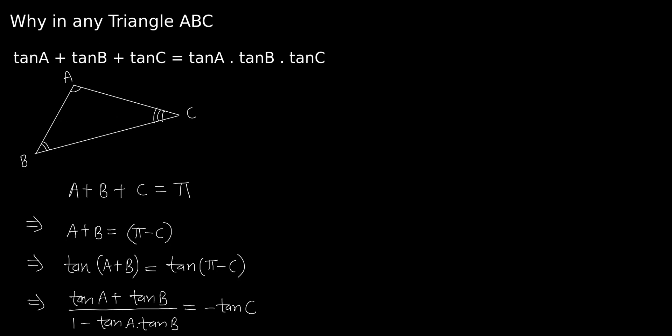From here we can send the denominator to the right-hand side, and we have tan A + tan B = -tan C times (1 - tan A · tan B). This means tan A + tan B equals... we can multiply -tan C into both terms.